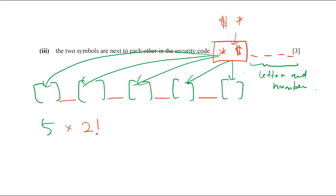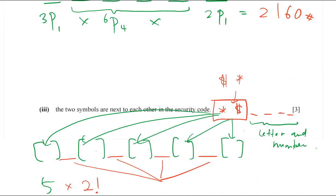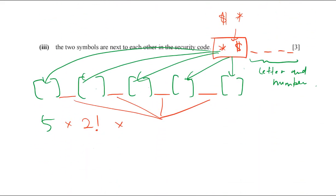Once the symbol group is handled, the remaining four positions are filled with letters and numbers. We have three letters and three numbers, giving six characters total. Since the question only requires the two symbols to be adjacent, I choose any four from those six for the remaining positions: 6P4. The full calculation is 5 × 2 × 6P4 = 3600.